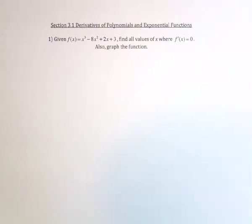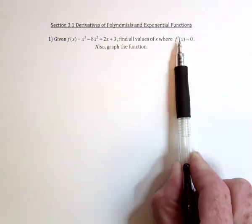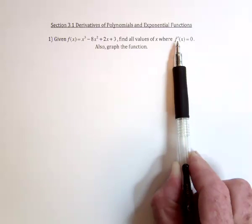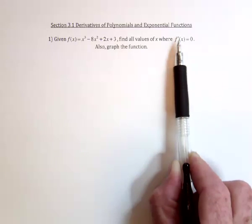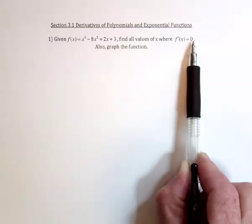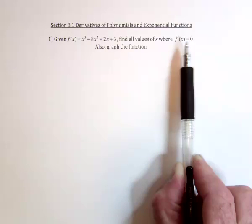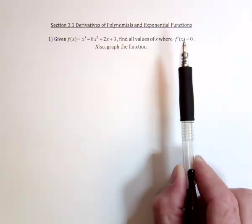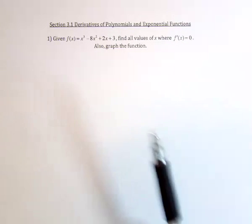We're going to take the derivative of this function and then set it equal to zero and solve for x. Keep in mind that the derivative is finding the slope of the tangent line. This says, when does slope equal zero? That means a horizontal tangent line. So another way to say it is, when are there horizontal tangent lines?